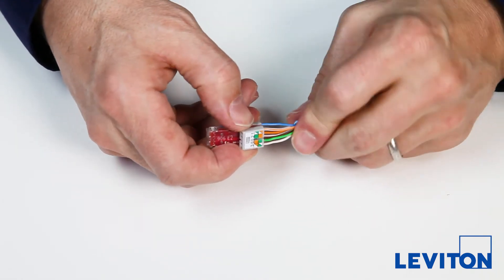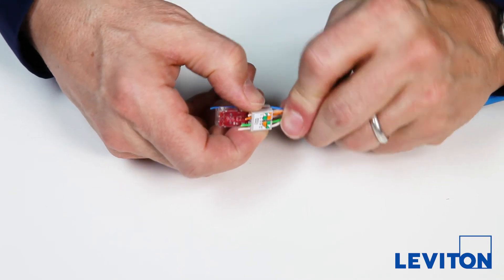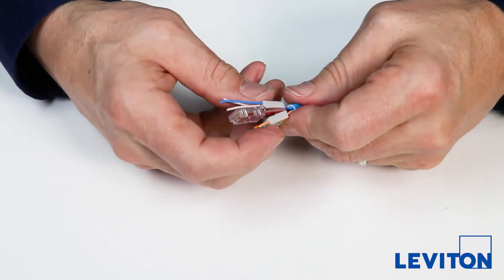Slide the wire manager down the wires. If you encounter any resistance, use needle nose pliers to gently pull the wires through.